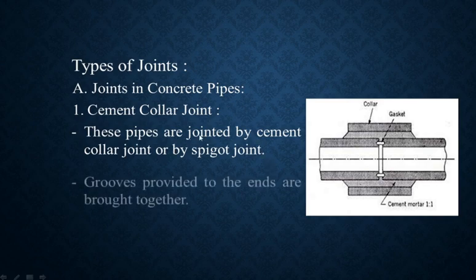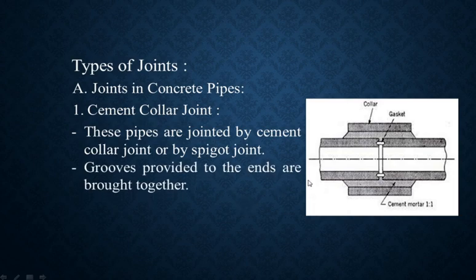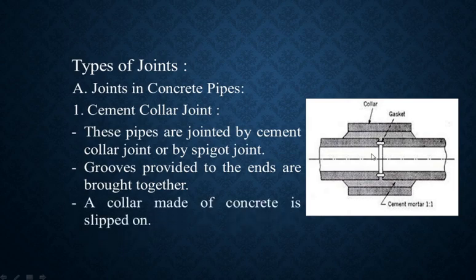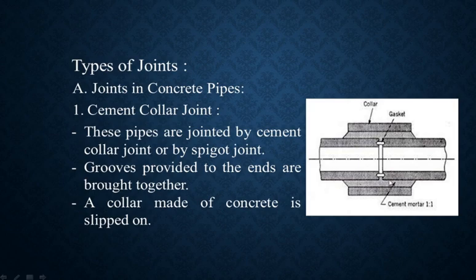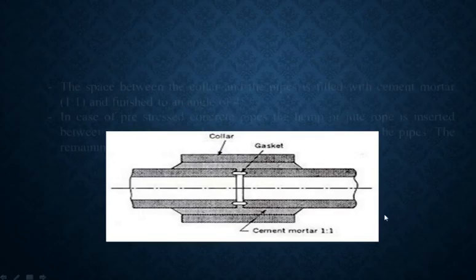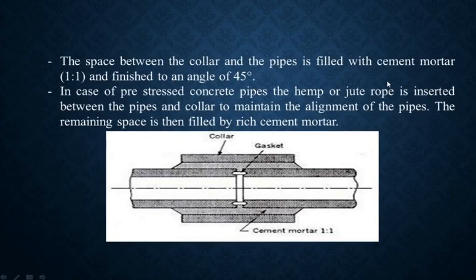In the spigot joint, grooves provided to the ends are brought together. This is one concrete pipe and this is another concrete pipe. Then a collar made of concrete is slipped on. The space between the collar and the pipes is filled with cement mortar 1:1 and finished to an angle of 45 degrees.